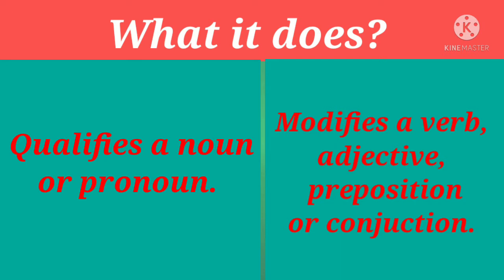Adjective qualifies a noun or pronoun — adjective जो होते हैं वो noun और pronoun को qualify करते हैं, उनकी विशेशता बताते हैं। On the other hand, adverbs modify a verb, adjective, preposition, और conjunction — जो adverbs होते हैं वो modify कर देते हैं verb के meaning को, adjective, preposition या conjunction के meaning को। I hope it is clear — वो विशेशता बता रहे हैं, लेकिन अलग-अलग चीजों की।